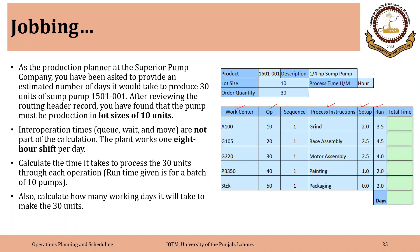The calculations are very similar to what we saw in the previous example. The only difference is that the time is given for a lot size of 10 units, so this run time is for 10 units. For the first operation, the time will simply be 2 plus 3 into 3.5.